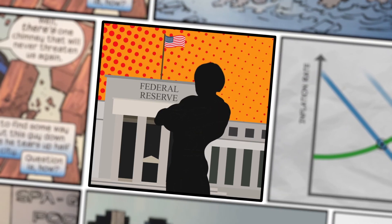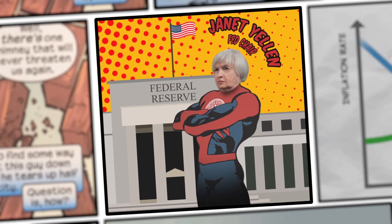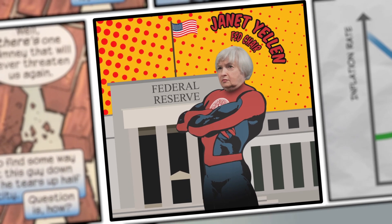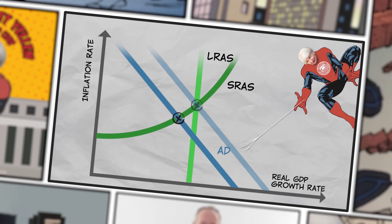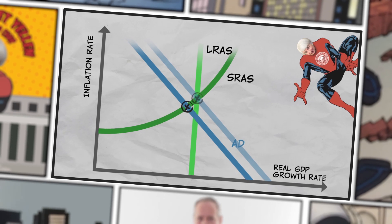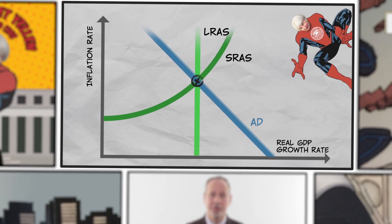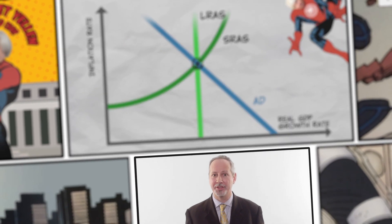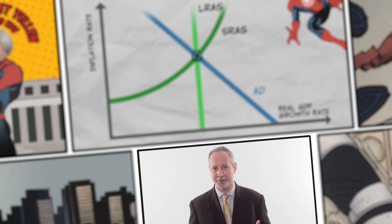Can the Fed combat this sluggish growth with monetary policy? Yes! By increasing the growth rate of the money supply, the Fed could offset the negative aggregate demand shock. Looks great — disaster avoided. If only it were so easy.